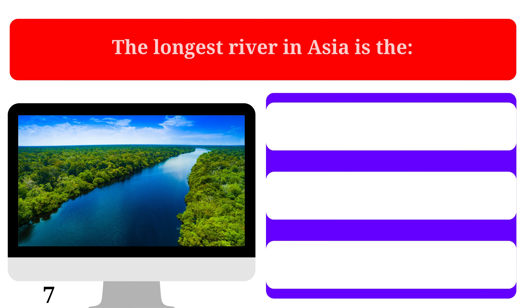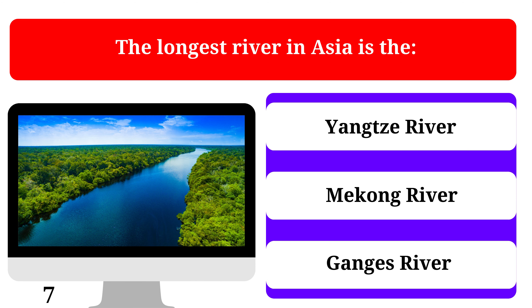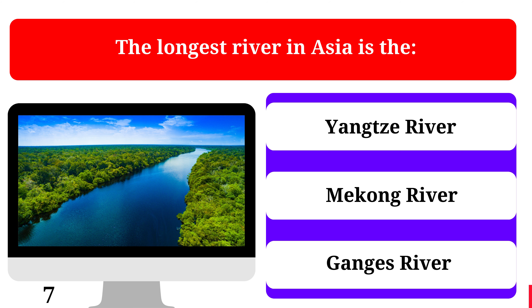The longest river in Asia is the Yangtze River, the Mekong River, or the Ganges River. The correct answer is the Yangtze River.